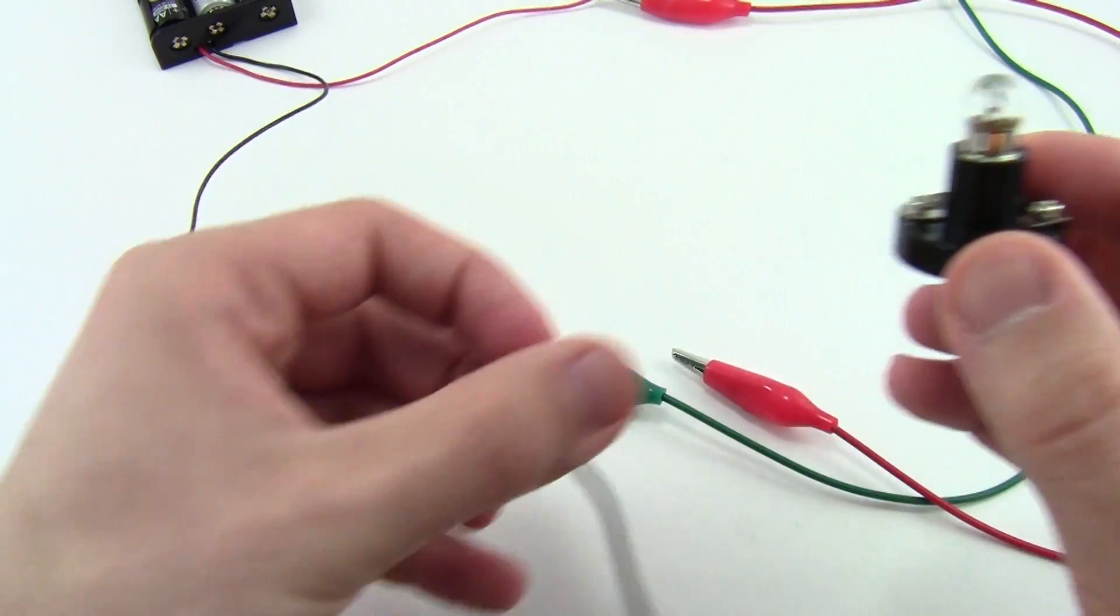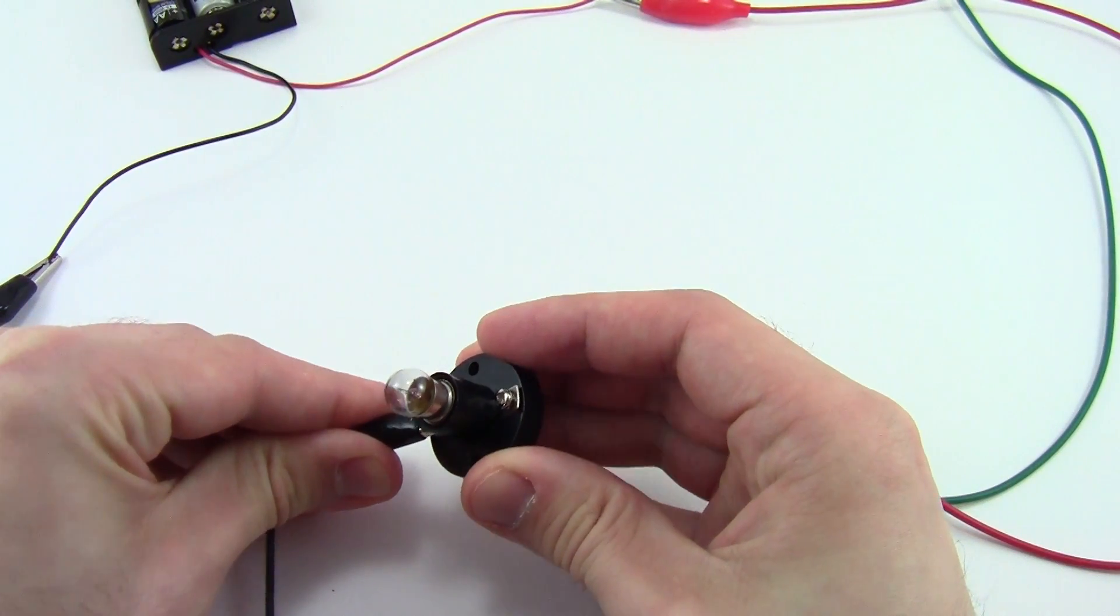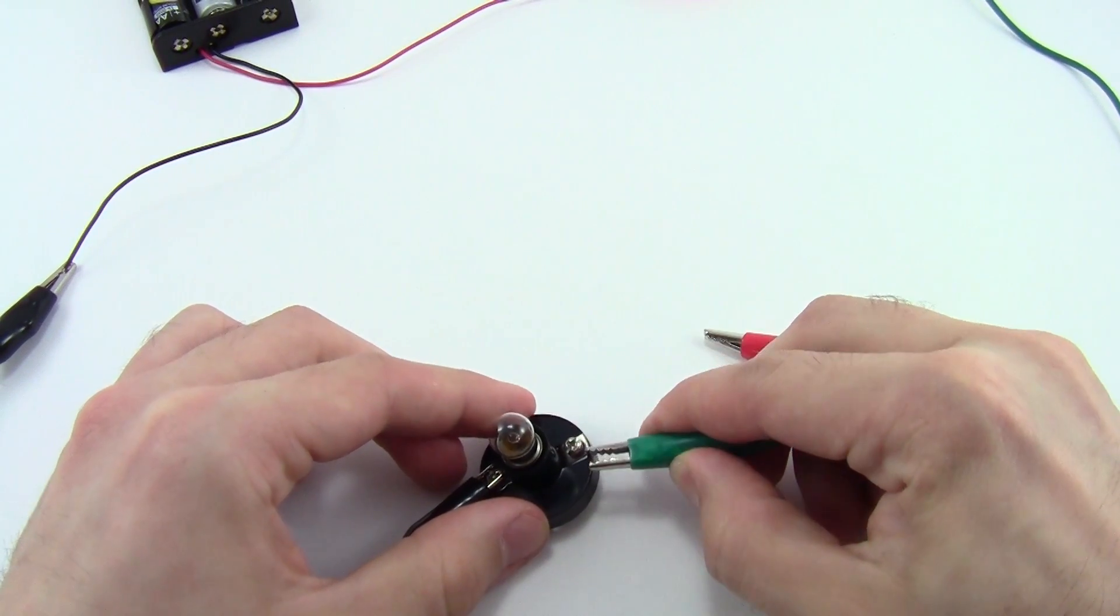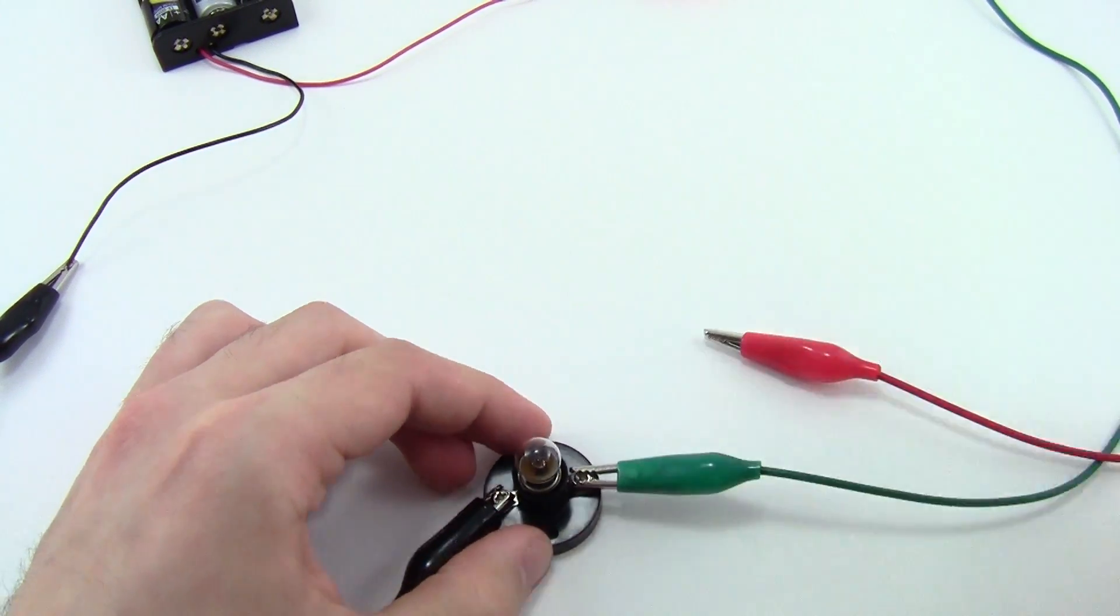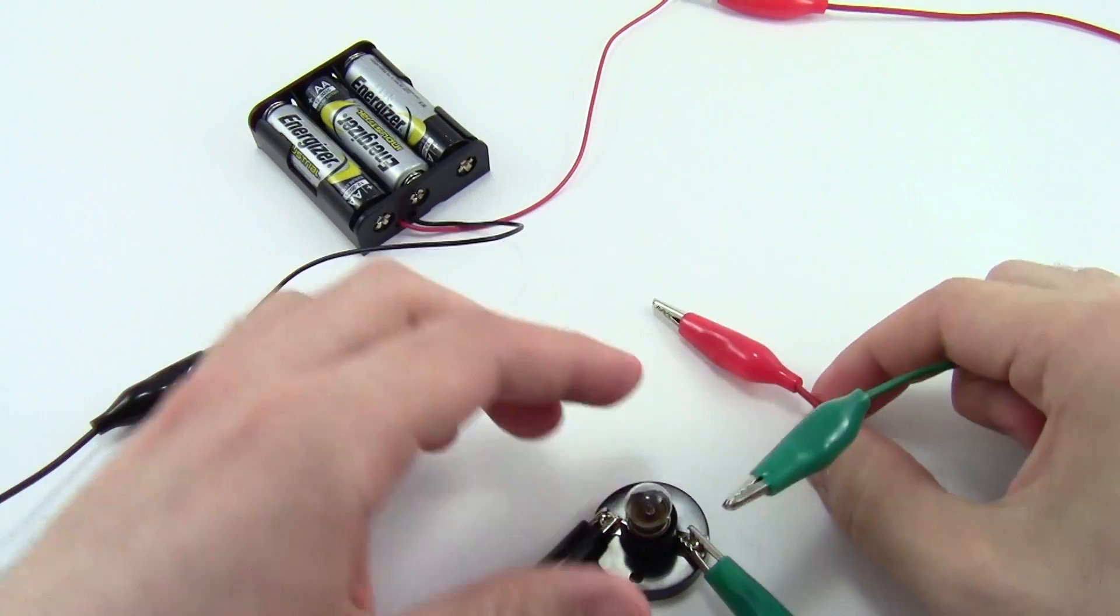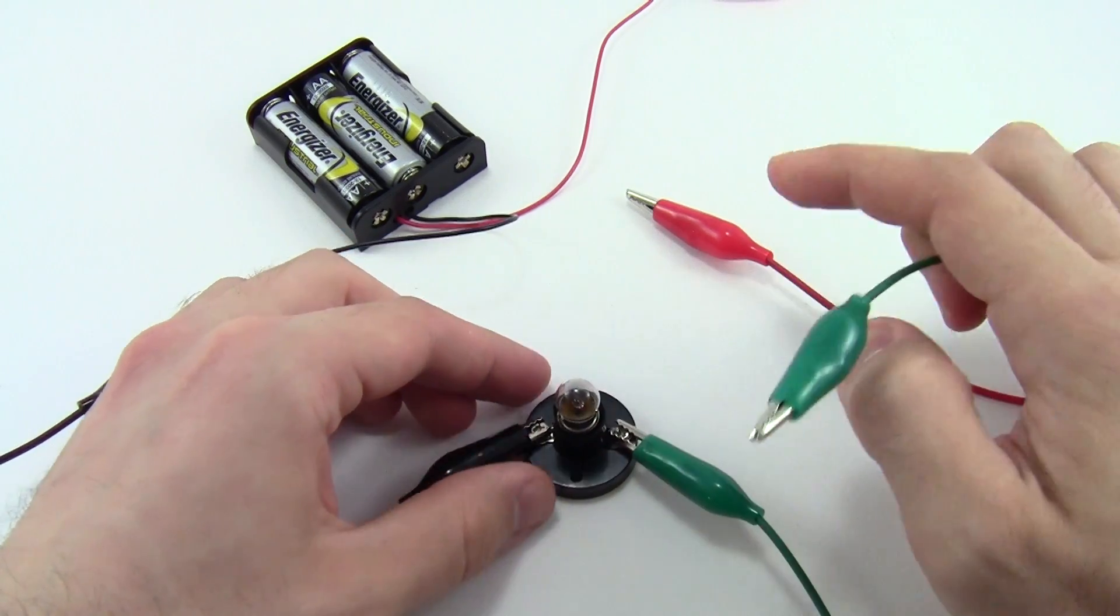Take the other end of the black alligator clip and connect it to one of the screws, and now take the green alligator clip, which you haven't used yet, and connect it to the other screw. So as of right now, we still have an open circuit. There is no complete path for the electricity to flow, so this light bulb does not light up.